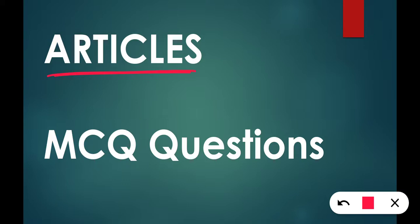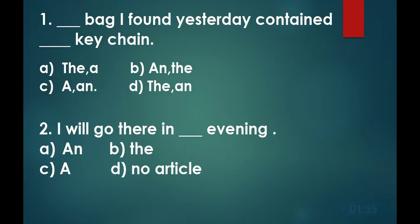You must do error detection exercises. So let's start the articles questions. Question number one is: the bag I found yesterday contained ___ key chain. Which one is the correct answer? The correct answer is option A: 'the' and 'a'. The bag I found yesterday contained a key chain.